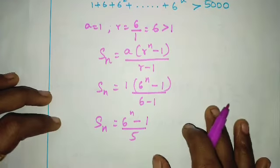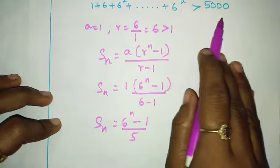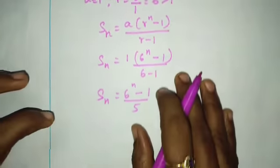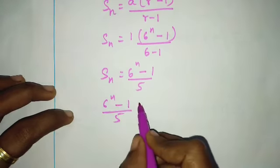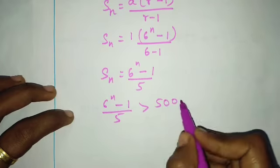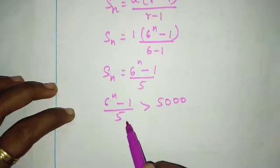They're saying this is greater than 5000. So 6 power n minus 1 divided by 5 is greater than 5000. We can cross multiply.